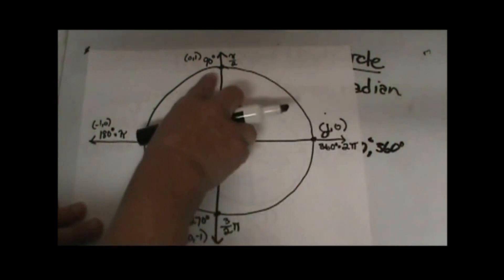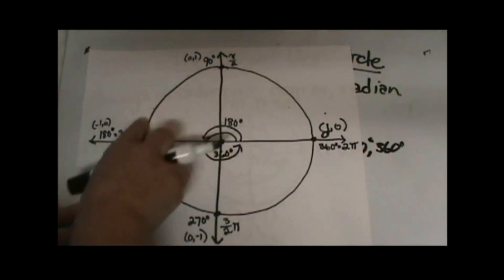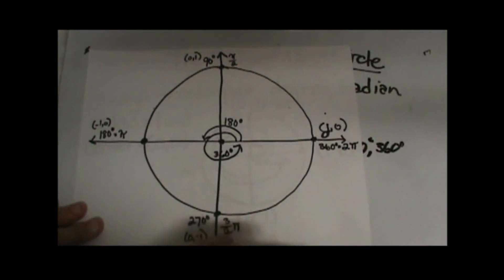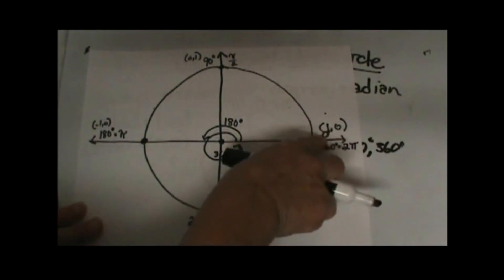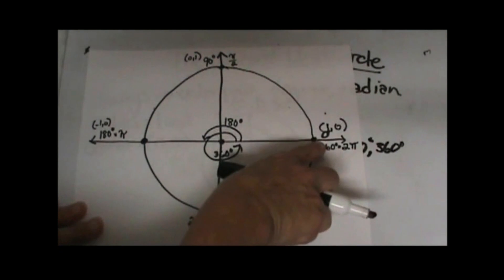So we have fourths, or a fourth of the way around the circle would be half of π or π/2. Three fourths of the way around the circle would be 3π/2. So you've got π/2, π, 3π/2, and then 2π.